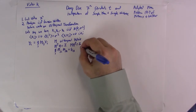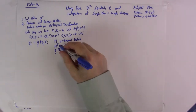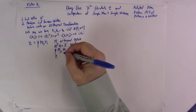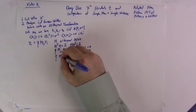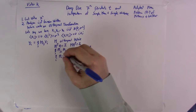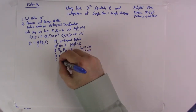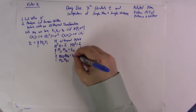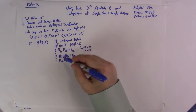We also have the other orthogonality relationship: the sum over i of M_ij times M_ik equals delta_jk. So we can either sum on the first index to get the other two indices in the Kronecker delta, or sum on the second index to get the first indices in the Kronecker delta.